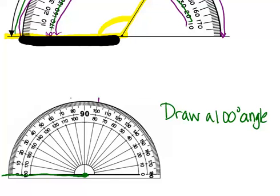But we're going to want to use the top set of numbers, so we're not going to use this one since we're starting from this side at 0 and following the top set of numbers to 100. So we're using this 100.